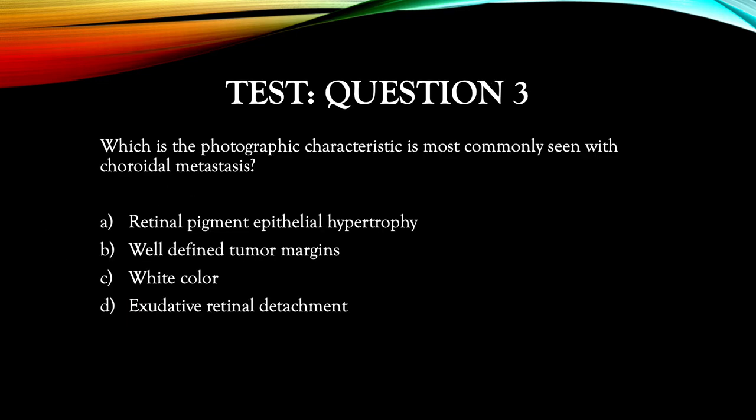Choroidal metastasis is the most common intraocular cancer. Relatively fast-growing, these tumors quickly infiltrate their surrounding uvea and consume the overlying retinal pigment epithelium. They are characterized by their rapidly created, poorly insulated, leaking tumor blood vessels. Which is the photographic characteristic most commonly seen with choroidal metastasis?